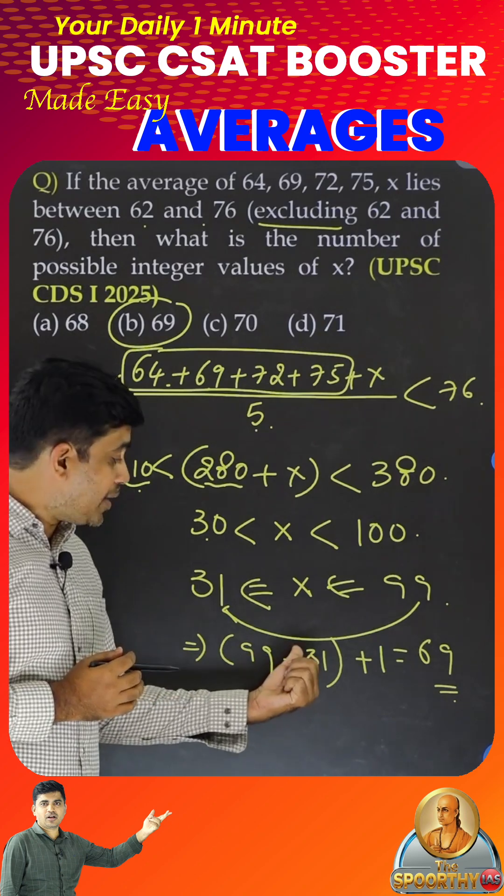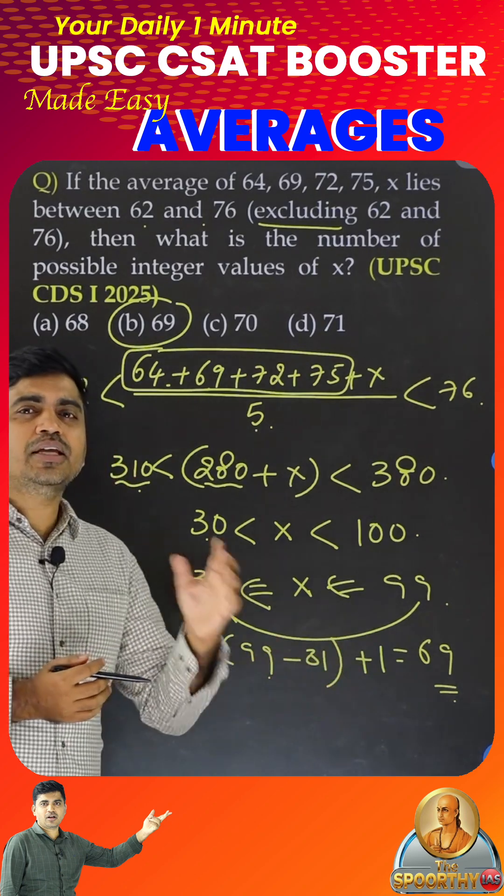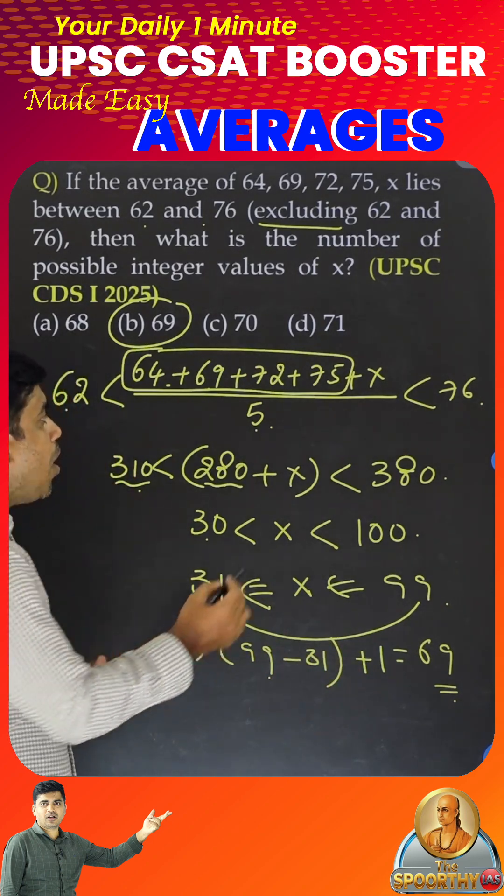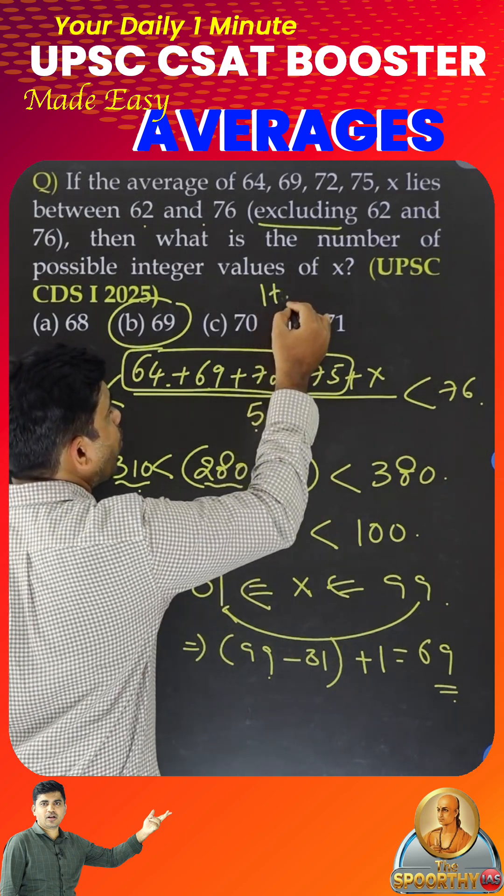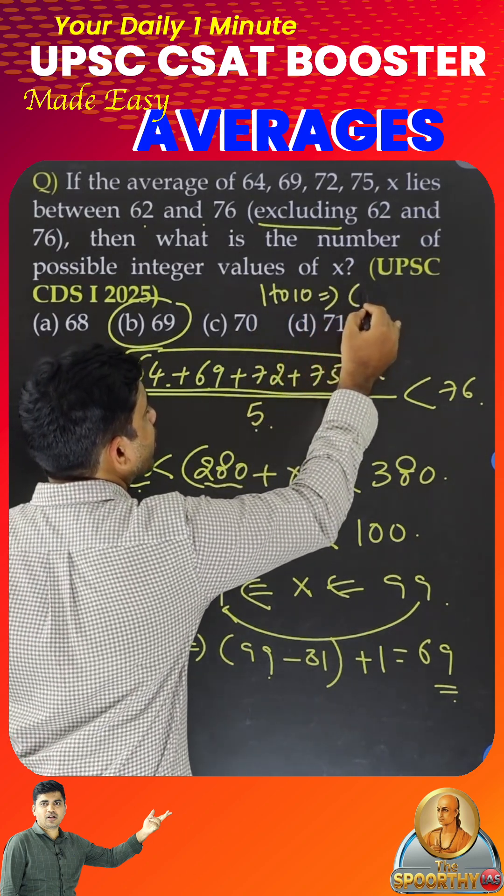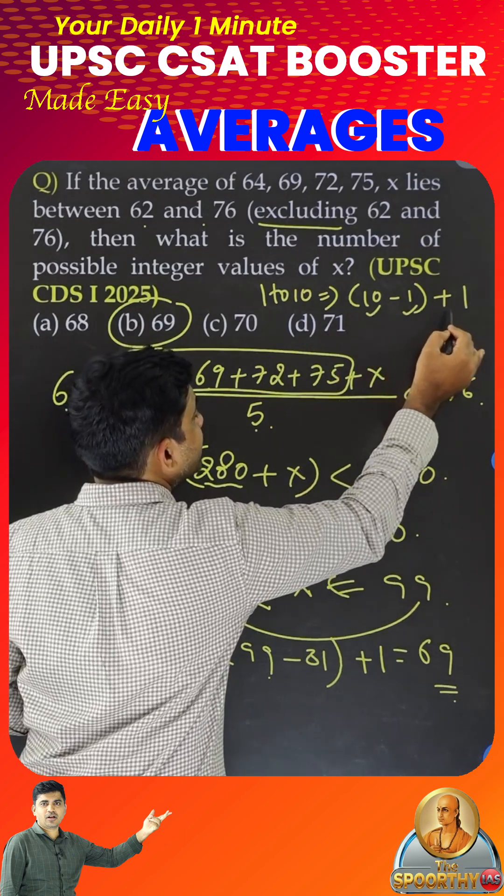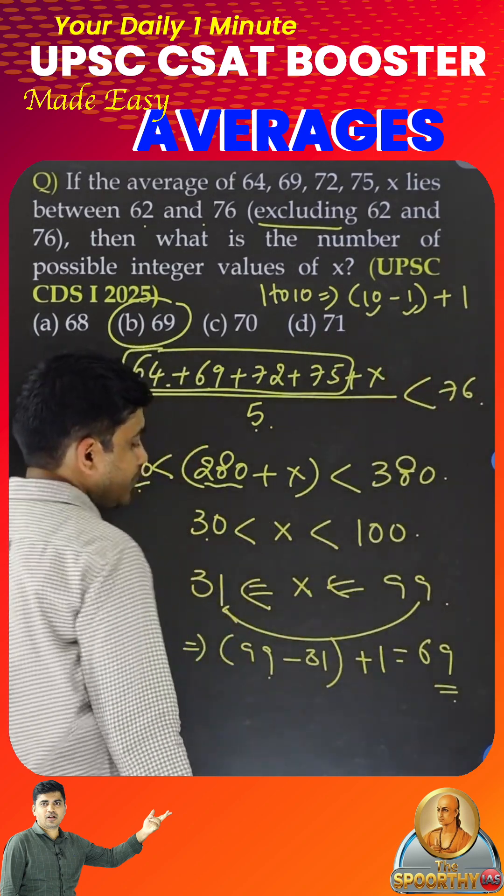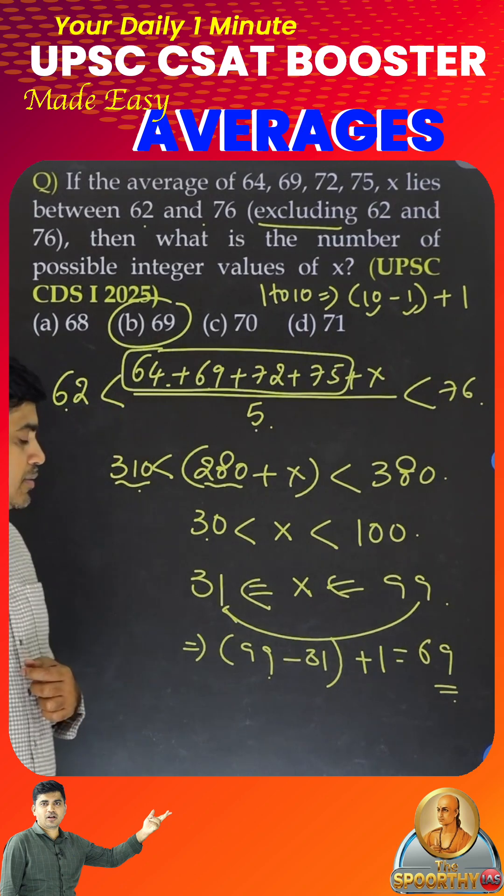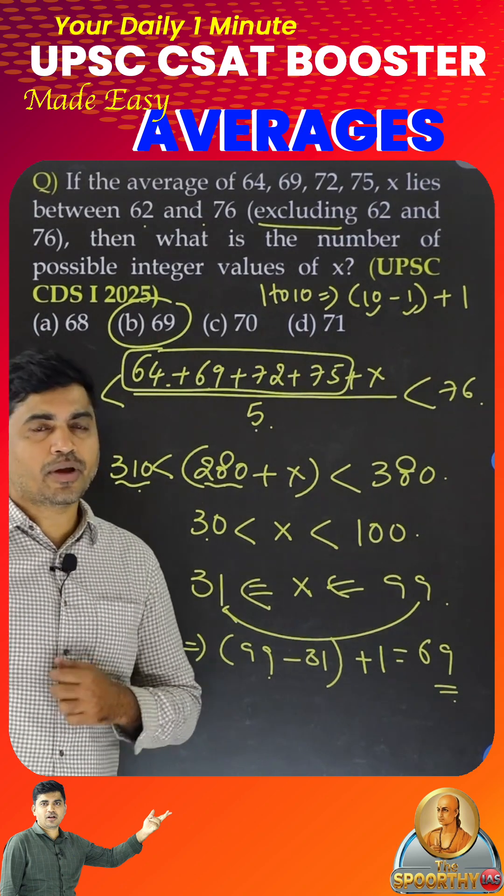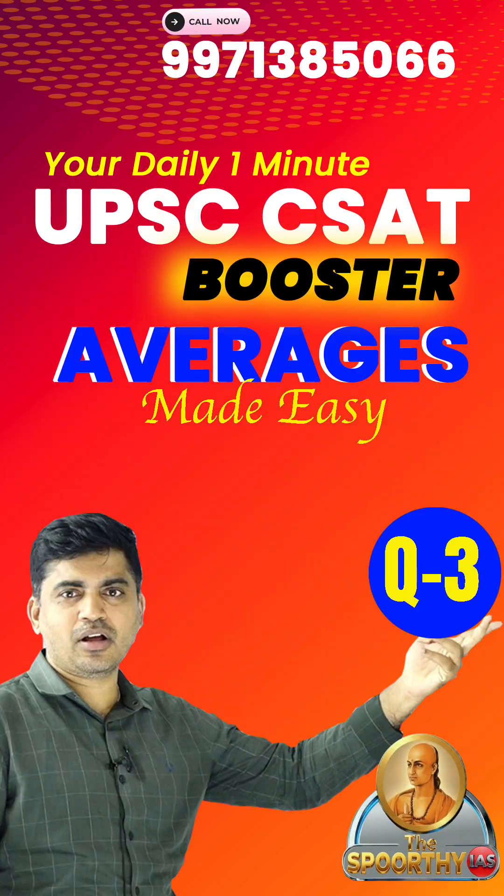Largest minus smallest plus 1. See, if you have any confusion, always take simple examples. 1 to 10, how many numbers? We say 10 minus 1 plus 1. So, answer is 69. Thank you.